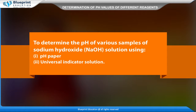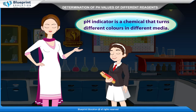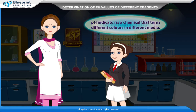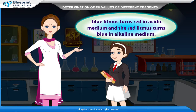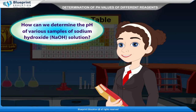To determine the pH of various samples of sodium hydroxide, NaOH, solution using pH paper and universal indicator solution. A pH indicator is a chemical that turns different colors in different media. For example, blue litmus turns red in acidic medium and red litmus turns blue in alkaline medium. How can we determine the pH of various samples of sodium hydroxide, NaOH, solution?